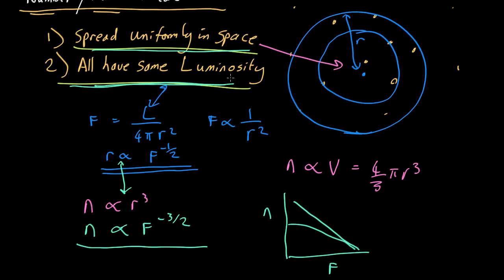Because let's say the luminous ones, the fluxes are all going to be bigger because L is going to be bigger, so you're going to have a different constant here. Faint ones, luminosity is small, so you're going to have a small different constant here, but nonetheless it's always going to have a number proportional to F to the minus 3 halves.